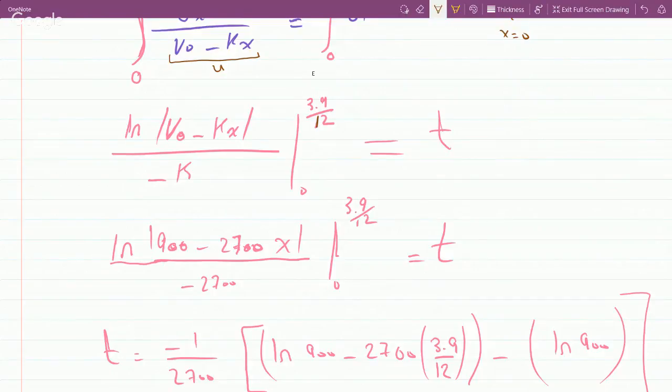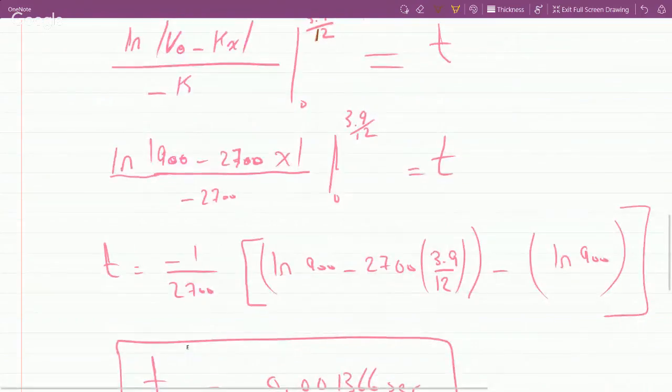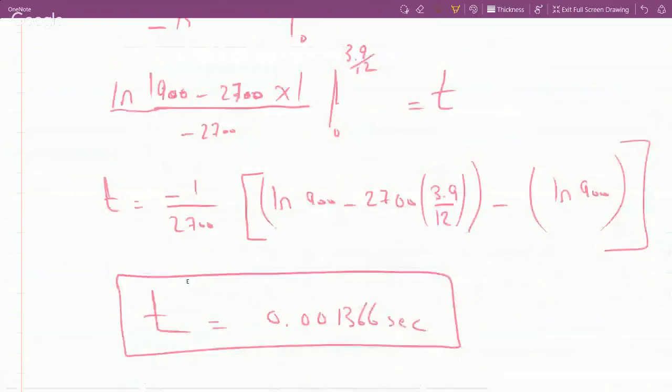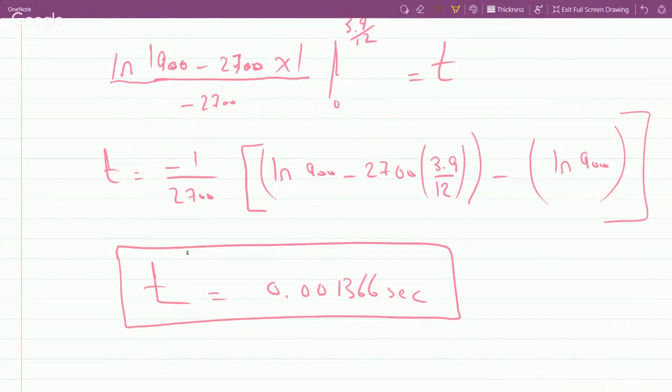So this would be the answer. I plugged in my v₀ of 900, my k is 2700, x over negative 2700, and then I evaluated the upper bound first, so I plugged in 3.9 over 12 for x minus plug in 0 for x, and you get this. Carry this over on the calculator and you get t to be 0.001366 seconds.